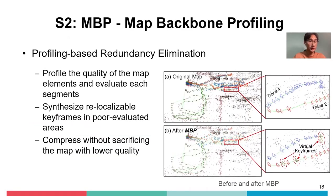To solve the global map redundancy issue, we introduce a map backbone profiling (MBP) algorithm and perform profiling-based redundancy elimination. Unlike current practice, we do not aggressively remove redundant map elements in co-visible areas. Instead, we first profile each map element and segment, then leverage these redundant elements to generate virtual keyframes to improve low-quality map segments. Once the overall quality of the global map is improved, we can compress the global map without compromising mapping quality.